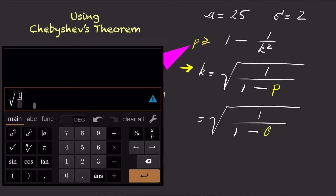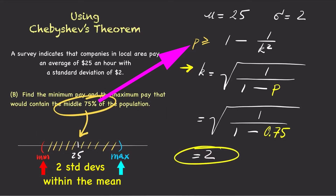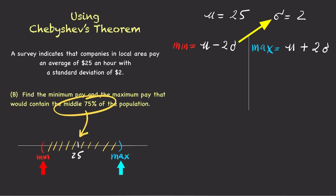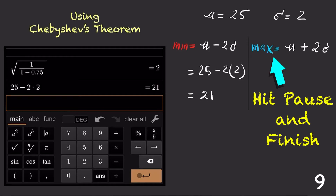Since the proportion we're cutting off around the mean is 75%, which is 0.75, plug in 0.75 for p, then use the calculator to evaluate. The answer is 2. By Chebyshev's theorem, two standard deviations around the mean would contain at least 75% of the population. The lower bound is 2 standard deviations below the mean and the upper bound is 2 standard deviations above the mean. We already know the standard deviation is $2, so for the lower bound we have 25 minus 2 times 2, which is 21.